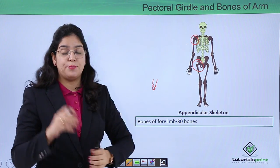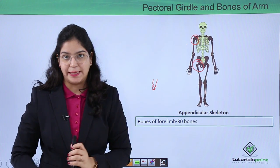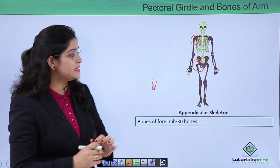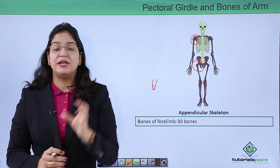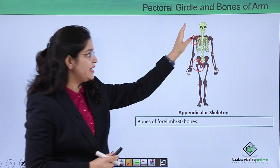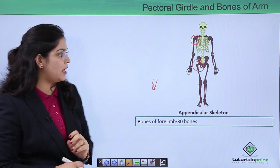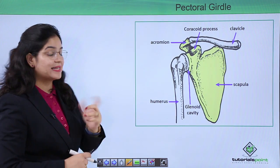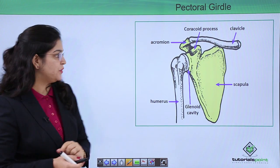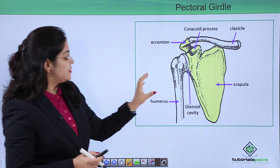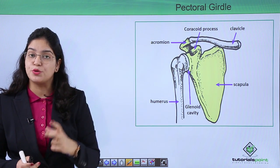We have a total of 30 bones in each limb, which means each girdle is connecting 30 bones to the axial skeleton. Now let's learn about the structure of the pectoral girdle.